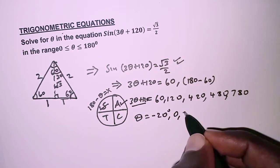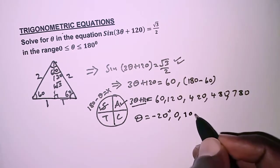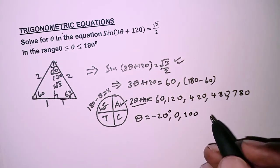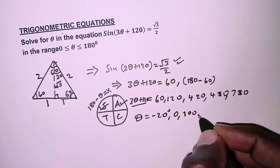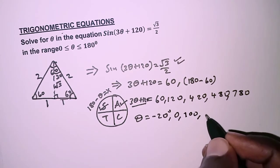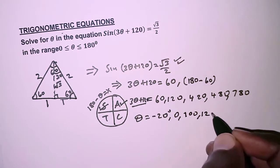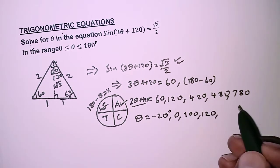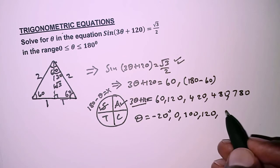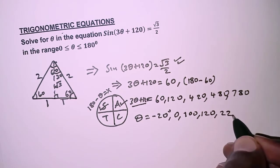Next for 420° we are going to have 100°. For 480° we are going to have 120°, and for 780° we are going to have 220°.